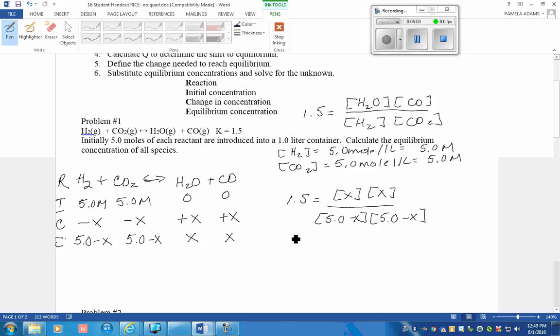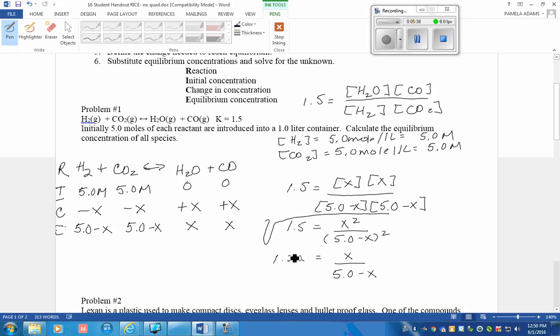Now I'm going to do just a bit of algebra here. 1.5 equals X squared over the quantity 5.0 minus X also squared. I'm trying to solve for X so I can find out how much of this was used up to produce this amount. The first thing I'm going to do is take the square root of the whole thing, and that will give me 1.22 equals X over 5.0 minus X. Now I'm going to distribute this. 1.22 times 5 is 6.12, 1.22 minus X, 1X is minus 1.22X, and that is equal to X.